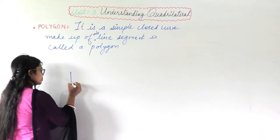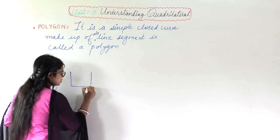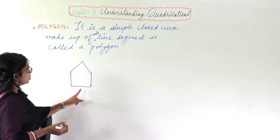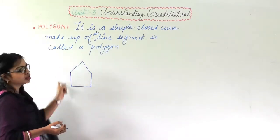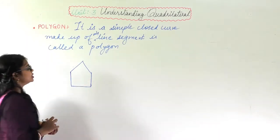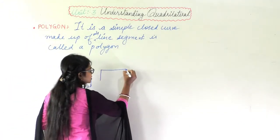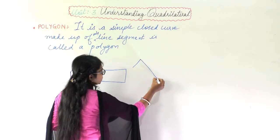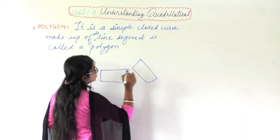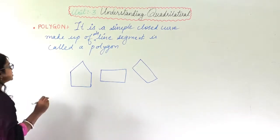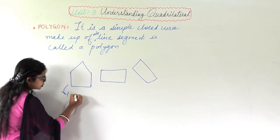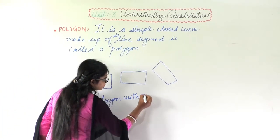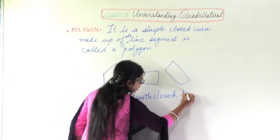Suppose I am making a diagram like this. These are all line segments, and I am joining them. These sides are all line segments and they are forming a closed loop — this is a polygon. Similarly, I can make other shapes that are also polygons — closed and made up of line segments.